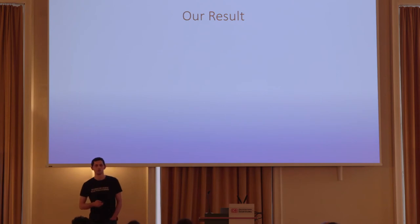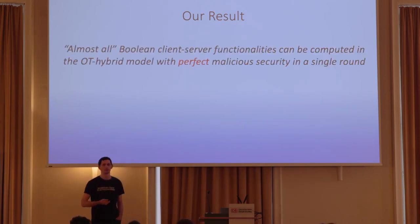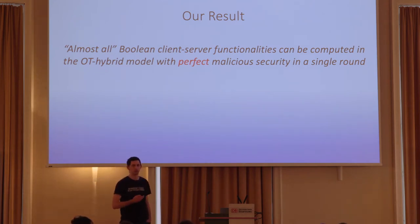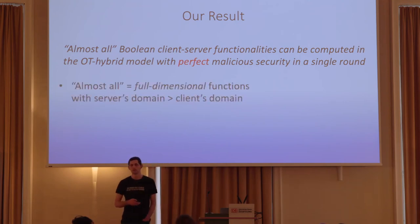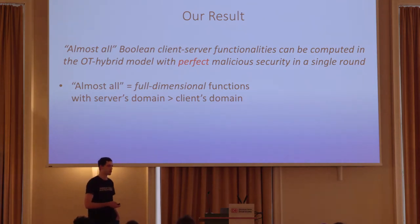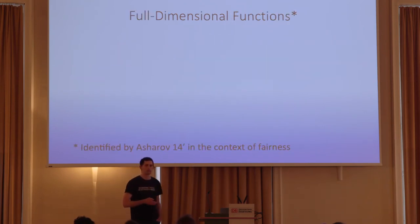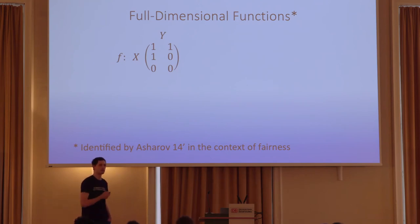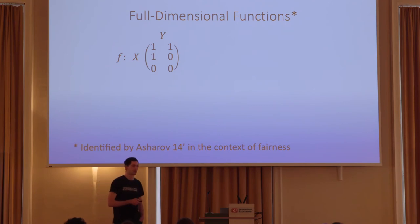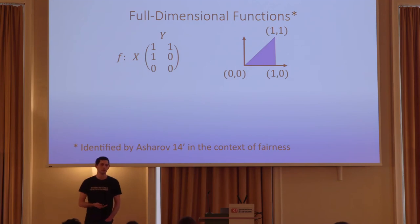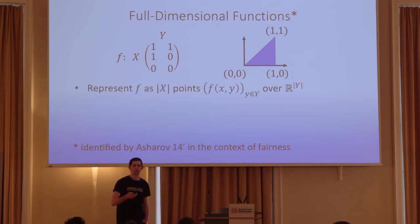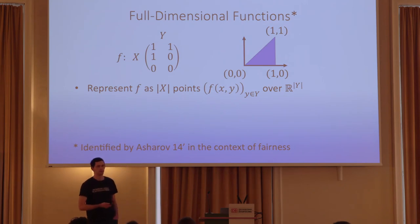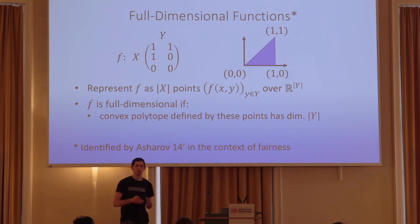What is our result more formally? We showed that almost anything can be computed with perfect security in the client-server setting. The 'almost all' refers to the class of functionalities called full-dimensional, where we also need to assume that the server's domain is strictly larger than the client's domain. Pictorially: if the server chooses a row, the client chooses a column, and the output is the corresponding entry, we can view the function as a collection of points forming a triangle — a two-dimensional object — and we say this function is full-dimensional. Generally, F is full-dimensional if the convex polytope defined by the collection of points F(x, y) over all x, y is of dimension |Y|.